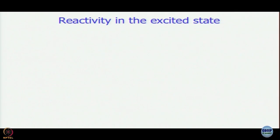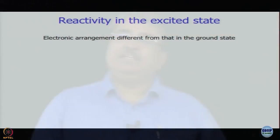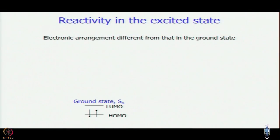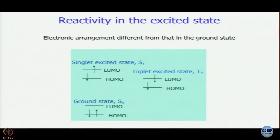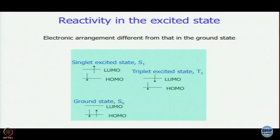The reactivity in the excited state is different from that of the ground state, because as chemists we know that electronic configuration is different, and it is electronic configuration that determines reactivity. If you look at the ground state, this is the electron configuration HOMO 2, LUMO 0. In first approximation, this is the electron configuration of the S1 state. And then the triplet state has one electron in HOMO and one in LUMO, but the spin wave functions are different. All these states have different reactivity, which lies at the heart of excited state processes.